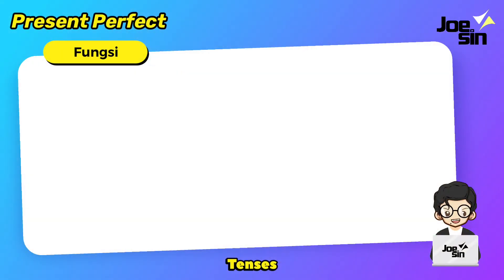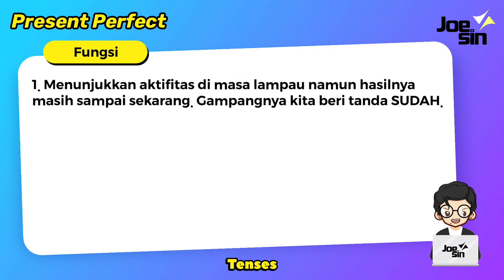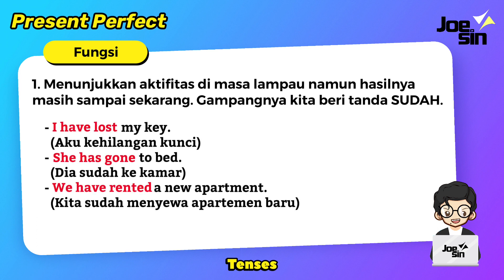Lalu kemudian maksud dan fungsi present perfect tense lebih jauh lagi. Setidaknya ada beberapa kondisi di mana kita bicara atau menulis dengan tenses ini. Yang pertama, menunjukkan aktivitas di masa lampau namun hasilnya masih sampai sekarang. Gampangnya kita beri tanda sudah. Contohnya: I've lost my key — aku kehilangan kunci. Konteksnya adalah kunciku hilang dan sampai sekarang aku belum menemukannya. Kalau misalnya aku cuma bilang I lost my key, berarti aku refernya pada waktu yang dahulu, fokus di situ saja, tidak memberikan efek sampai sekarang.